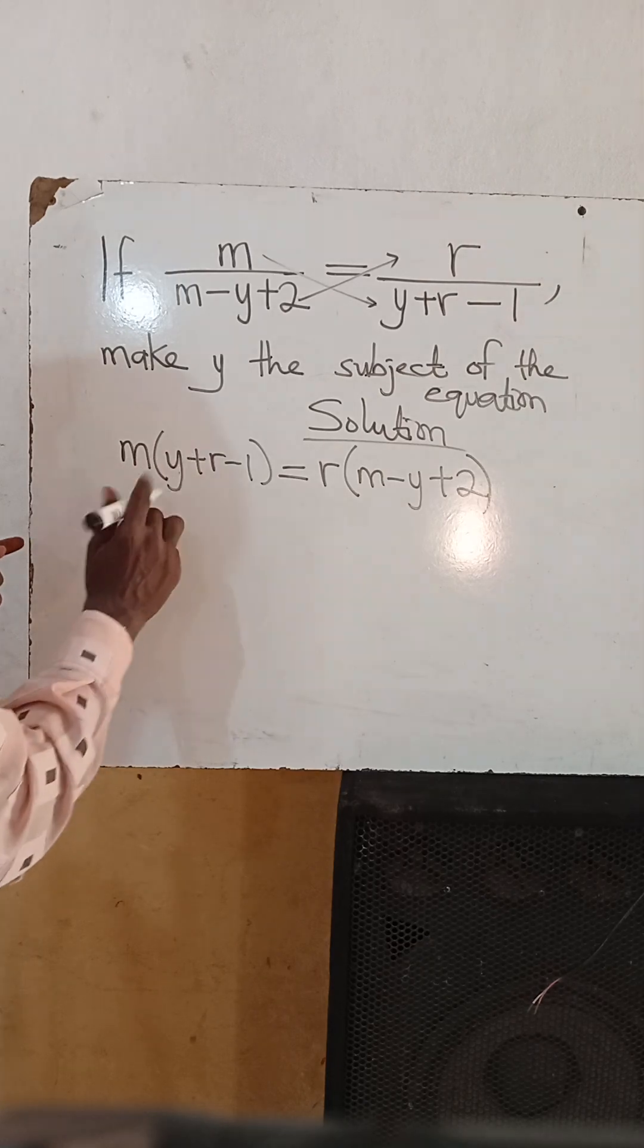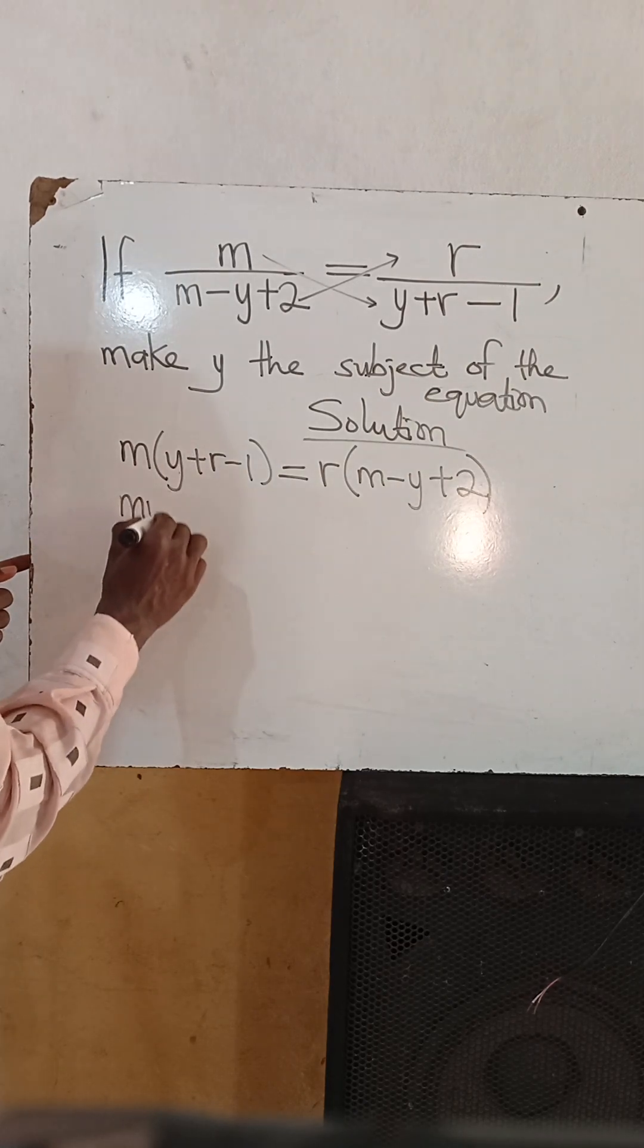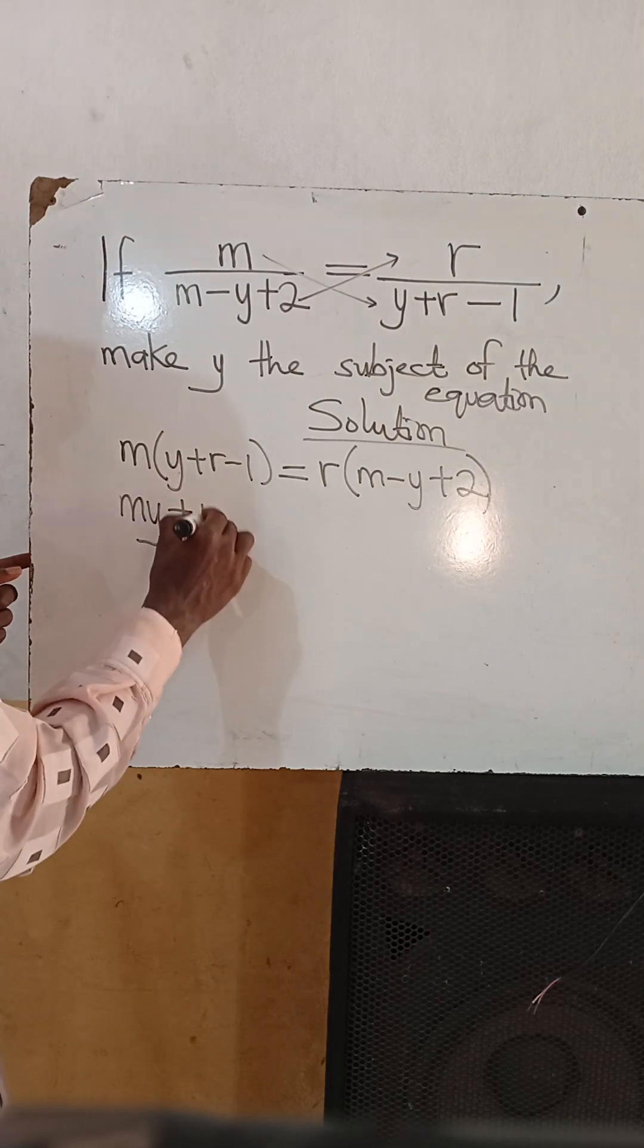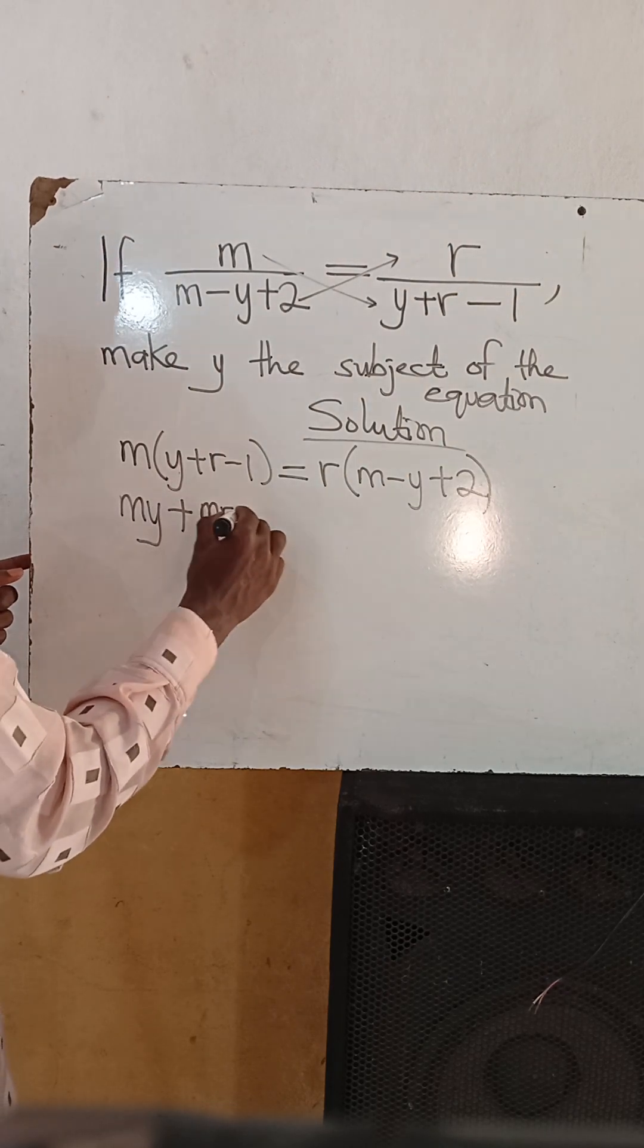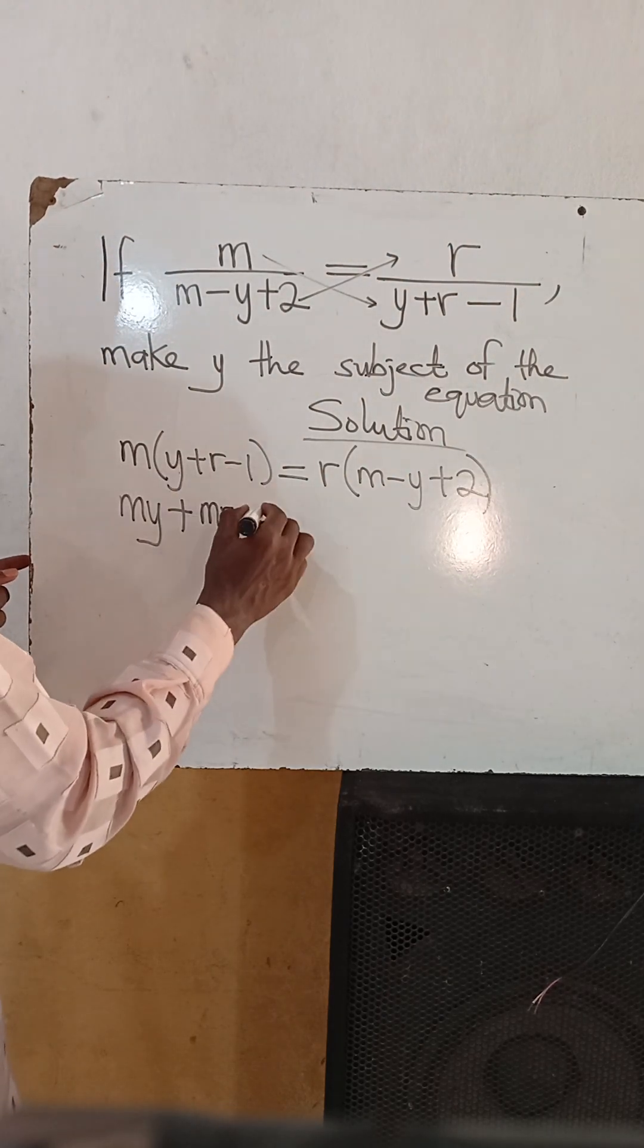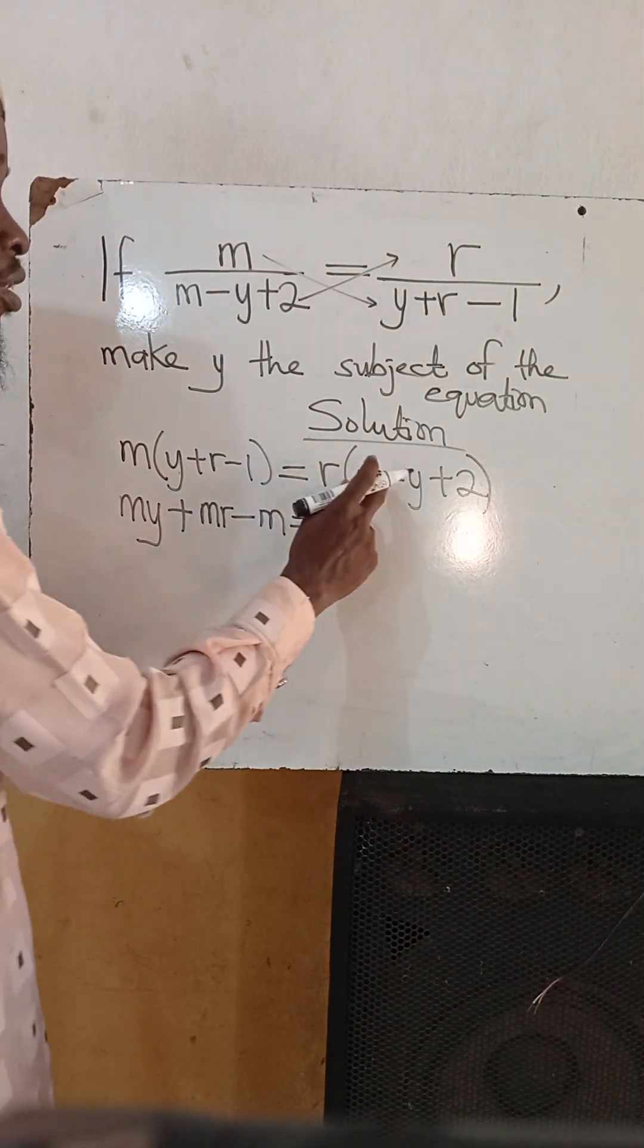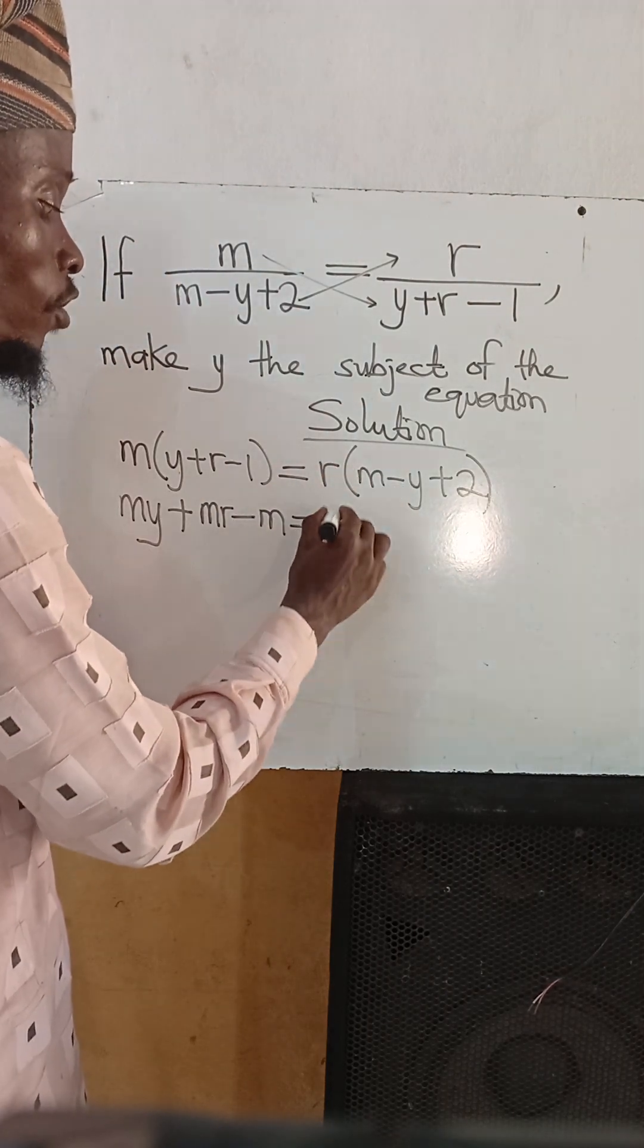Let's open the bracket. M times y gives us my, plus m times r gives us mr, minus m times 1 gives us m. This is equal to r times m, which gives us mr.